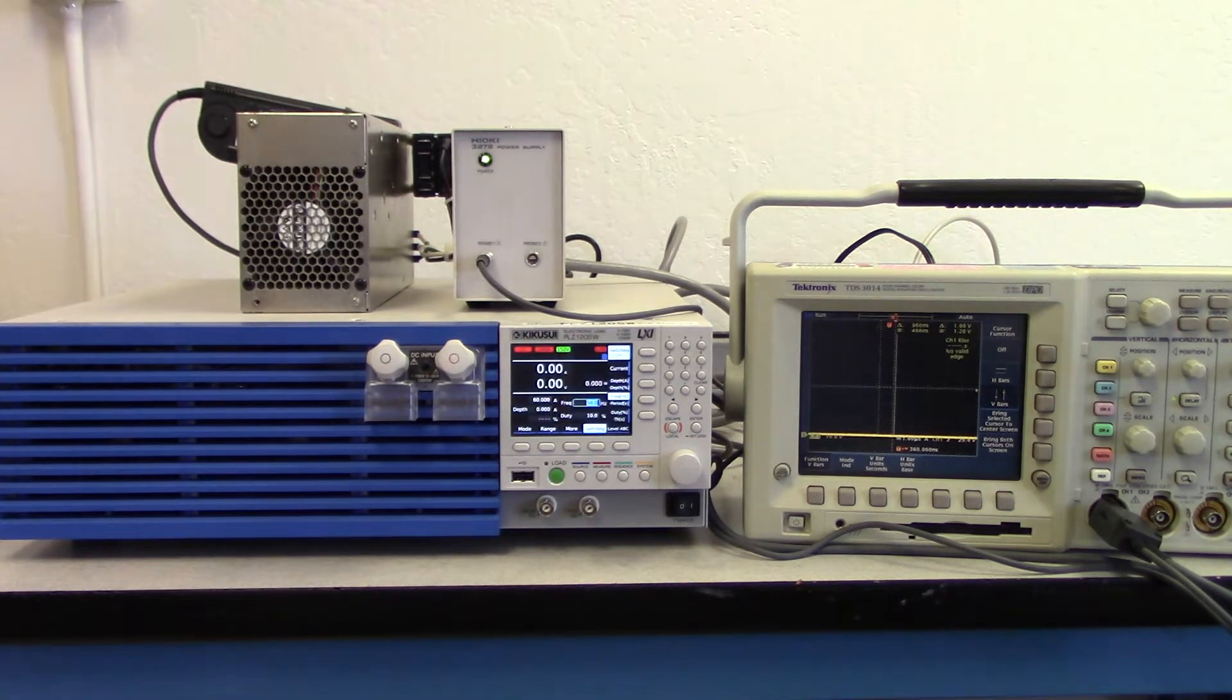The scope is set to 1 microsecond per division on the x-axis and 10 volts per division on the y-axis. Let's turn on the supply and the load as well.